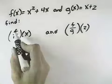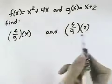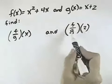We want to find the quotient f over g of x, and then also evaluate that at 2 to find f over g of 2.